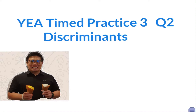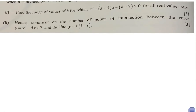On discriminants. For the following, we need to find the range of values of k for which x squared plus k minus 4x minus k minus 7 is more than zero for all real values of x.